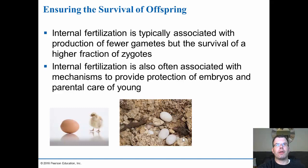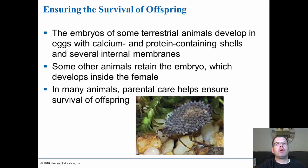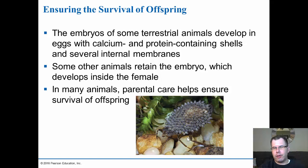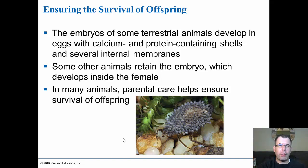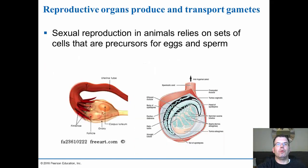Embryos of some terrestrial animals develop in eggs with calcium and protein-containing shells and several internal membranes to keep them alive, while others retain the embryo inside the female. Parental care helps ensure survival — here you can see an insect carrying eggs and embryos on its back, which is common in spiders and ticks. Parental care of embryos ensures more survive to become fully developed animals.